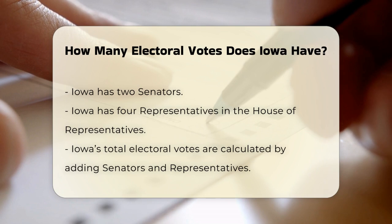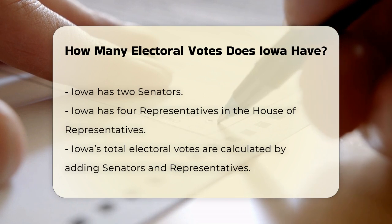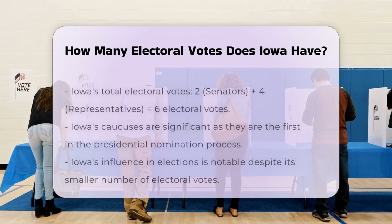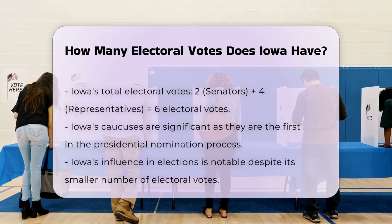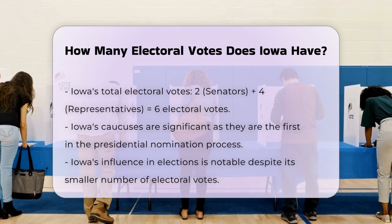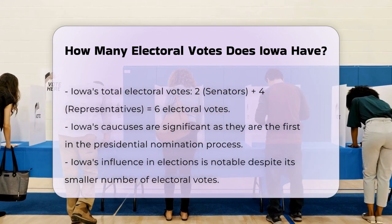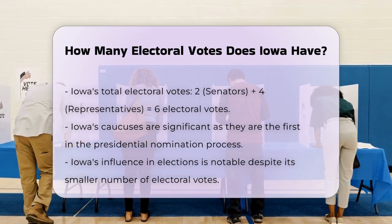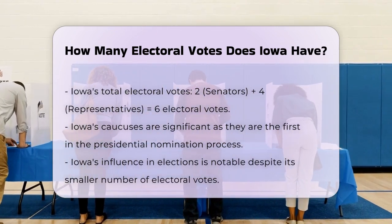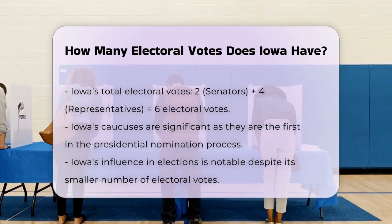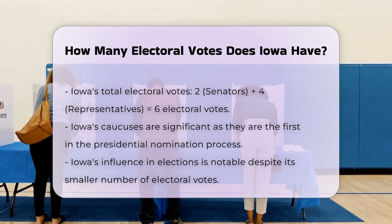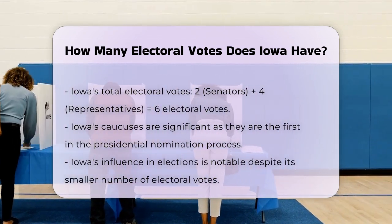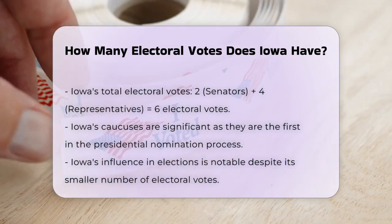Calculating Iowa's Electoral Votes: To calculate Iowa's total electoral votes, we add the number of senators to the number of representatives. Iowa has two senators and four representatives. So when we add these numbers together, two senators plus four representatives equals six electoral votes.